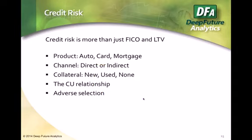Collateral matters, of course. And there's the credit union relationship — a simple way to look at it is how much does that member have in any form of deposit or investment with your institution. When you add up all those deposits, the relationship is simple: the more deposits, the lower the losses. As soon as you get into a few thousand dollars, the charge-off rate is dramatically lower. It tells us that relationship really does matter.